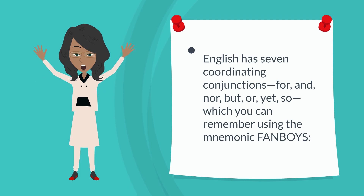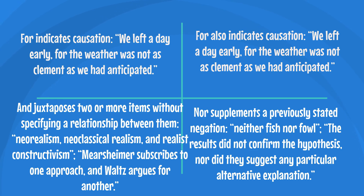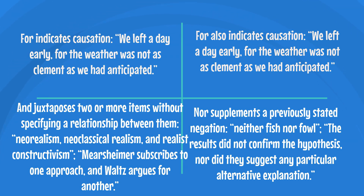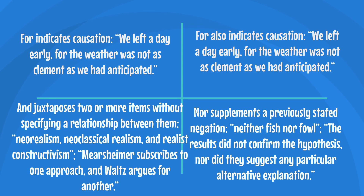'For' indicates causation: 'We left a day early, for the weather was not as clement as we had anticipated.' 'And' juxtaposes two or more items without specifying a relationship between them: 'Neorealism, neoclassical realism, and realist constructivism — Meersheimer subscribes to one approach and Waltz argues for another.' 'Nor' supplements a previously stated negation: 'Neither fish nor fowl'; 'The results did not confirm the hypothesis, nor did they suggest any particular alternative explanation.'